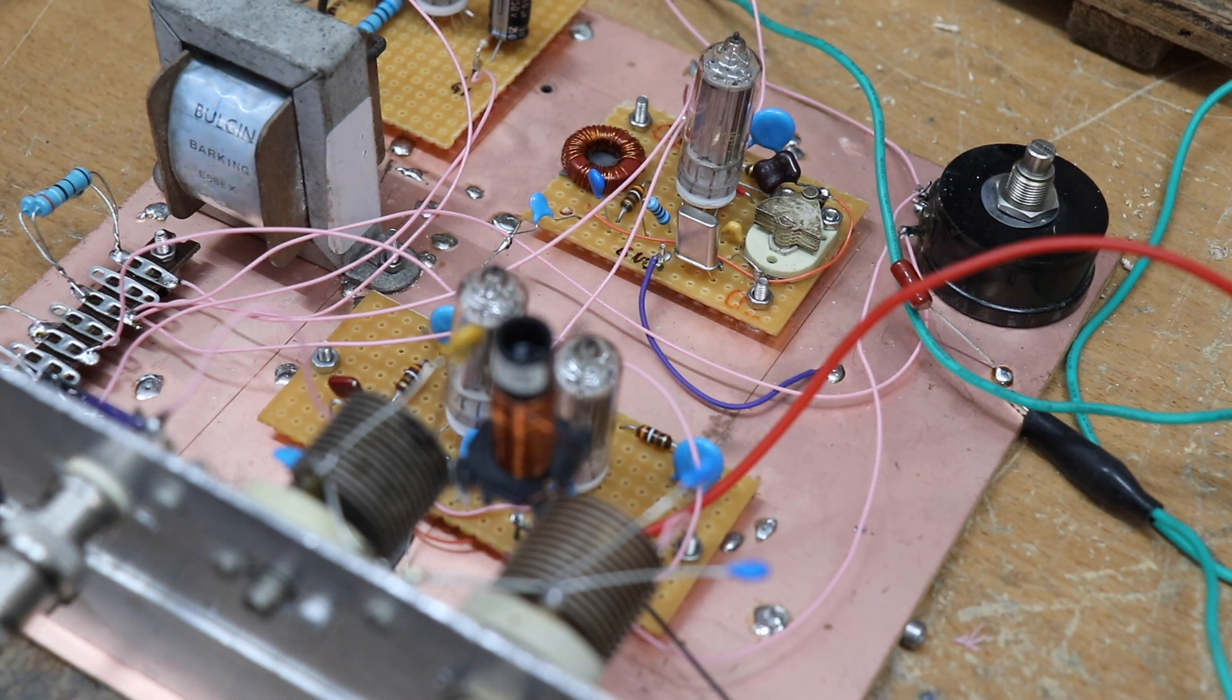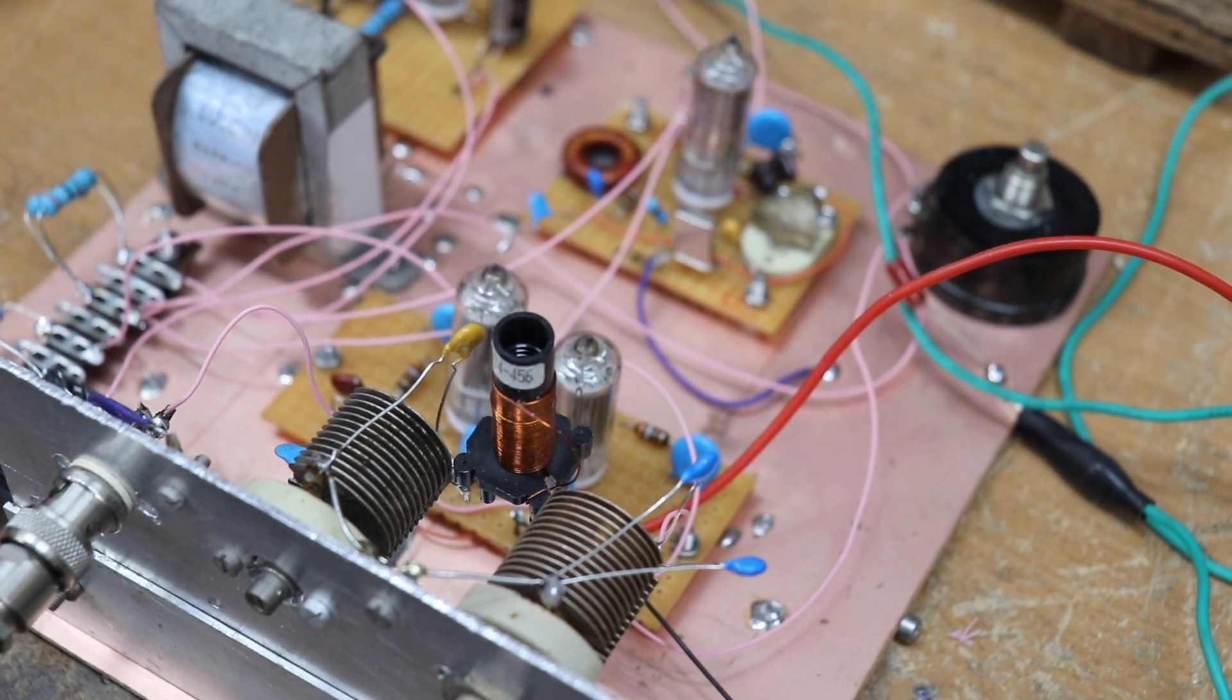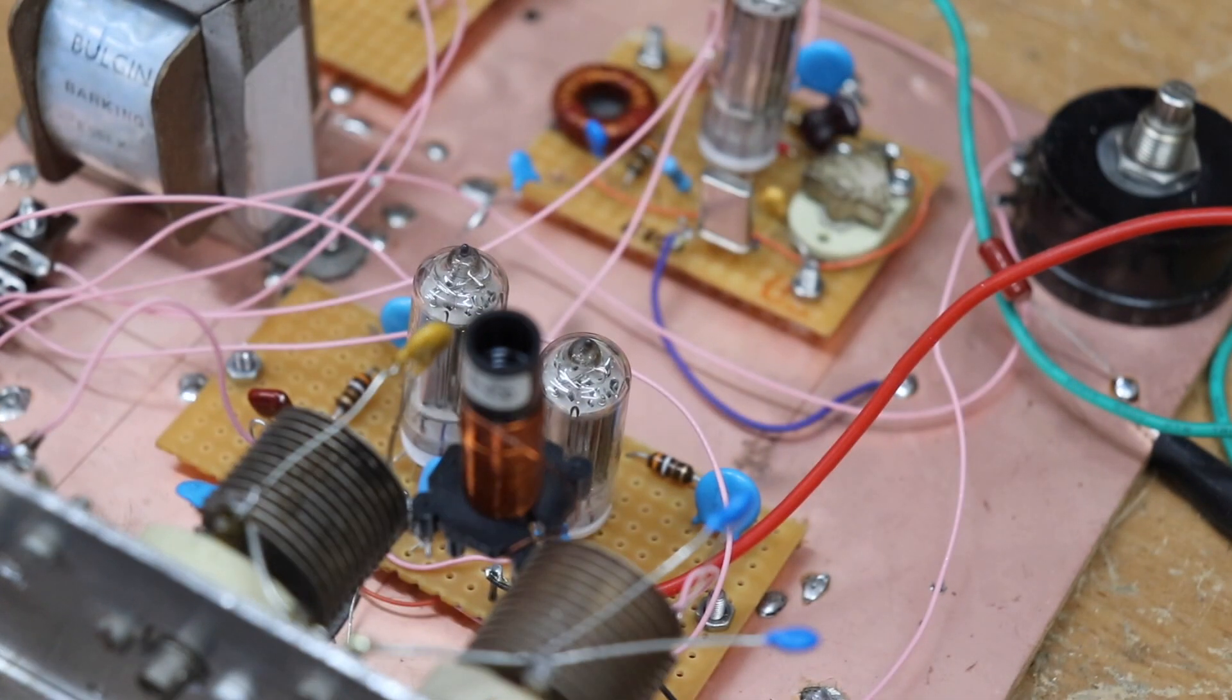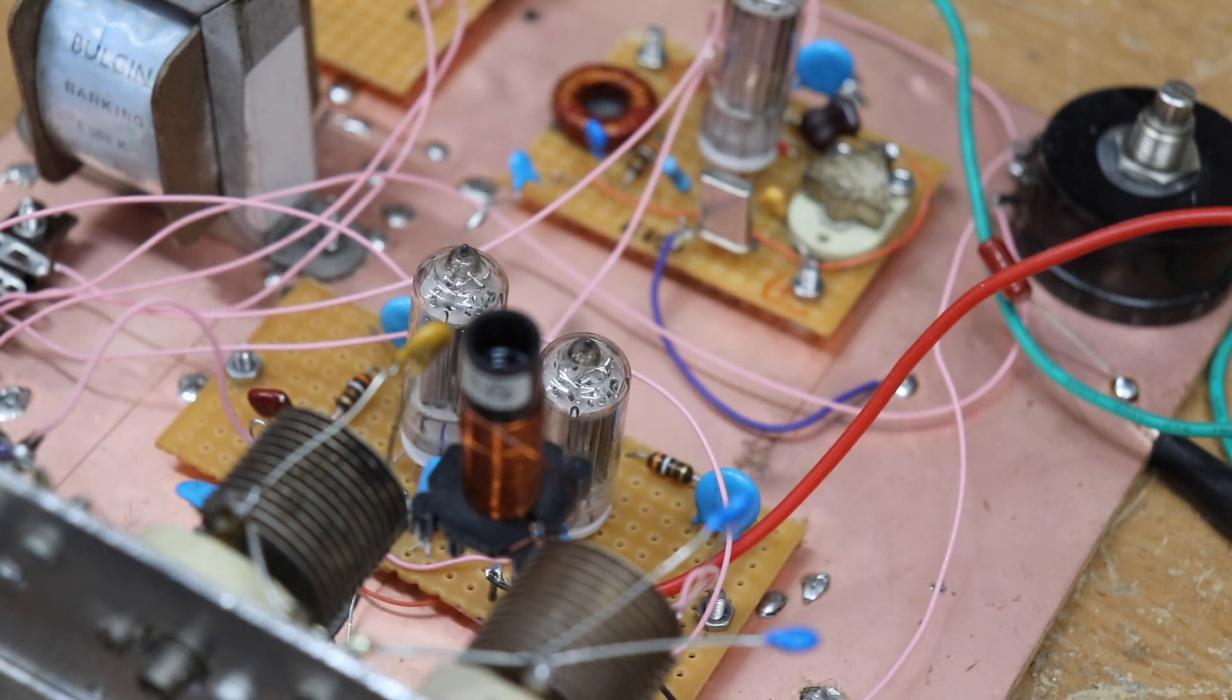And in the foreground there we've got the PA, a couple of tubes in parallel. If you can see that. And I've done it all on little boards as well which makes it quite nice. I think one of the things with these tubes is that because they don't have valve bases you can make them up on perfboard.